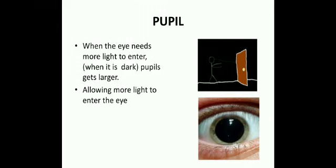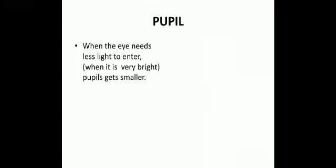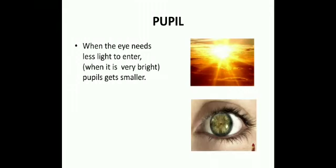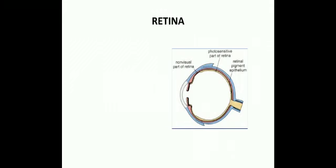The pupil is the central hole in the iris. In dark conditions, the pupil gets larger, allowing more light to enter the eye. When the eye needs less light, the pupil constricts. This is how the iris and the pupil adjust themselves to allow the required amount of light into the eye.